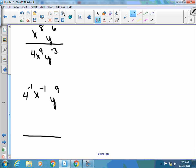So now, the 4 and the x get flipped to the bottom, x is just to the first, so I'm not going to put anything there, y to the 9th is in my numerator. So, how does this help? This helps with numbers in which I can simplify.